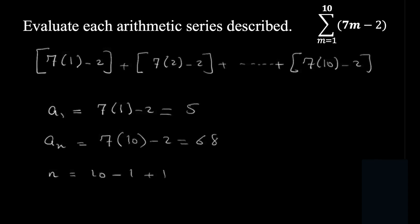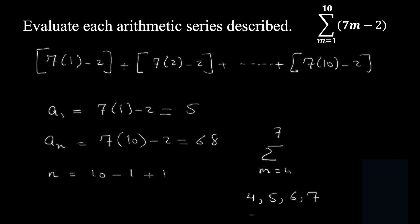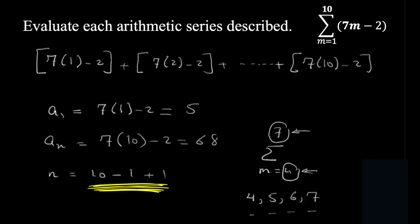Remember this form because sometimes they don't write it starting from m equals 1. For example, if you have m equals 4 to 7, you might guess 3 terms but it's actually 4. Count them: 4, 5, 6, 7 — that's 1, 2, 3, 4 terms. That's why we say last minus lower bound plus 1: 7 minus 4 is 3, plus 1 equals 4. Always subtract upper bound minus lower bound and add 1. So here, 10 minus 1 plus 1 equals 10 terms.